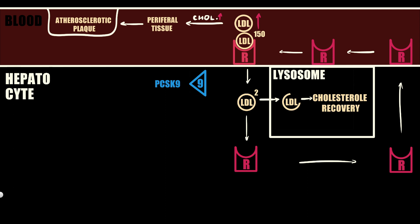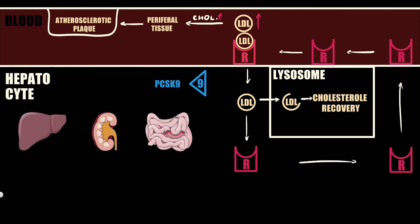Proprotein convertase subtilisin/kexin type 9, or shortly PCSK9, is a protein that can regulate recycling of LDL receptors. The major sources of circulating PCSK9 are the liver, kidney, and small intestine. PCSK9 is also produced by vascular cells such as vascular smooth muscle cells and endothelial cells, and at lower levels in macrophages.